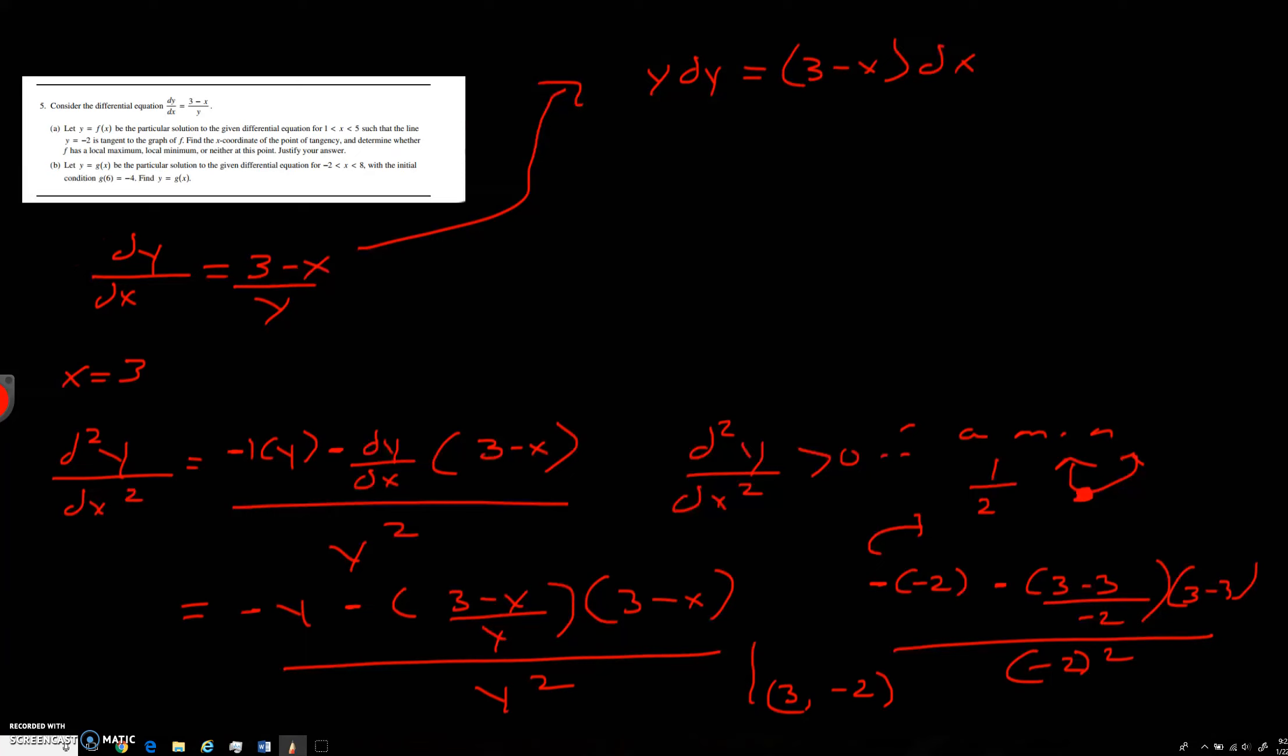You're going to have to integrate now. So when you integrate, you're going to get y squared over 2 equals 3x minus x squared over 2 plus c. And it gave us 6 comma negative 4.